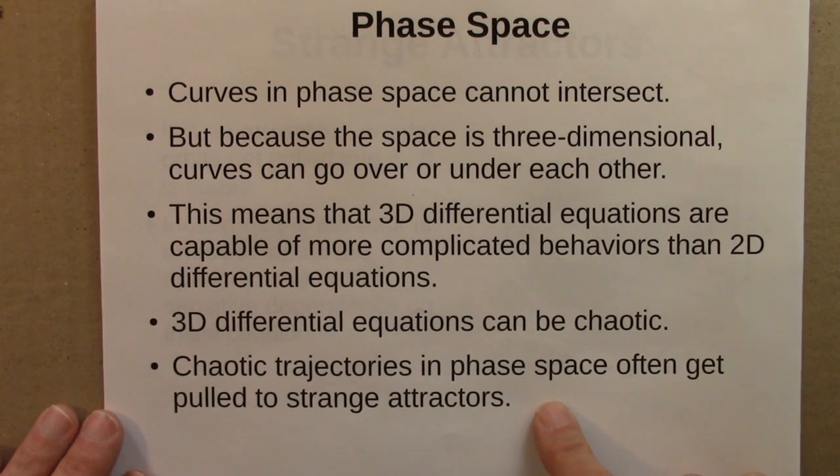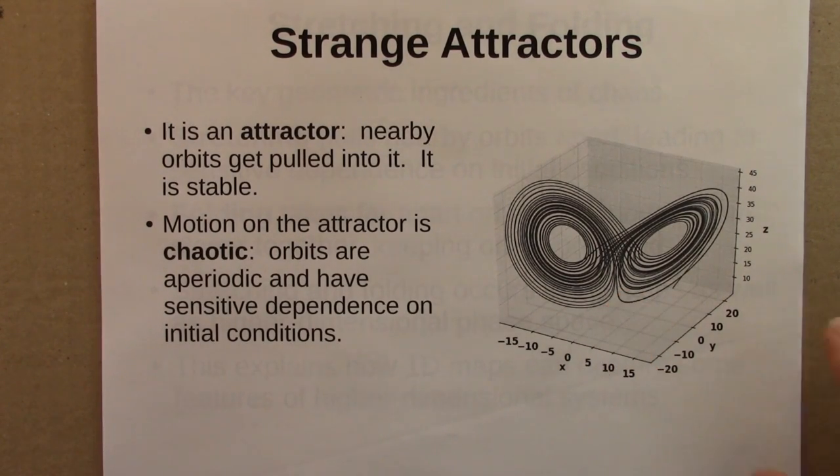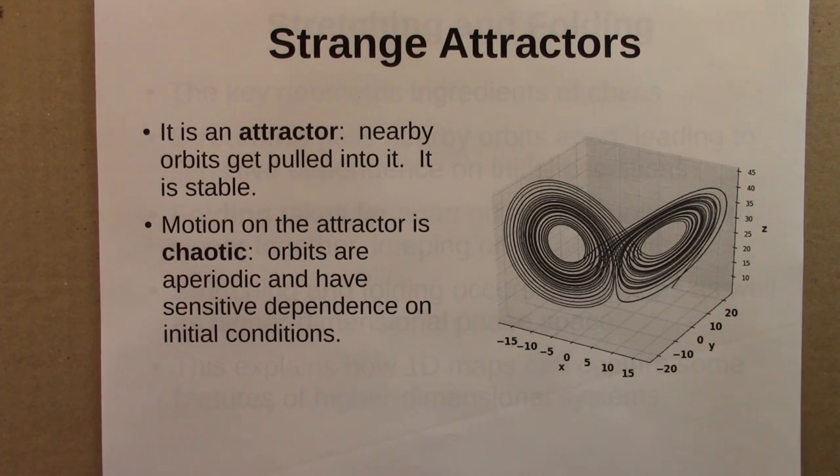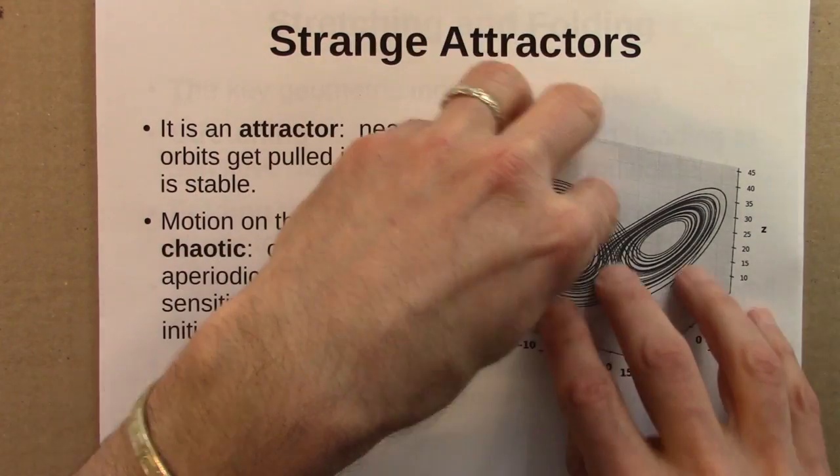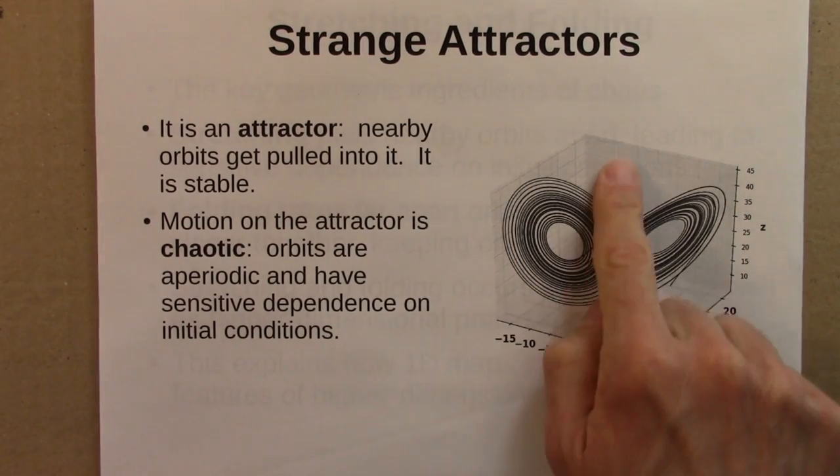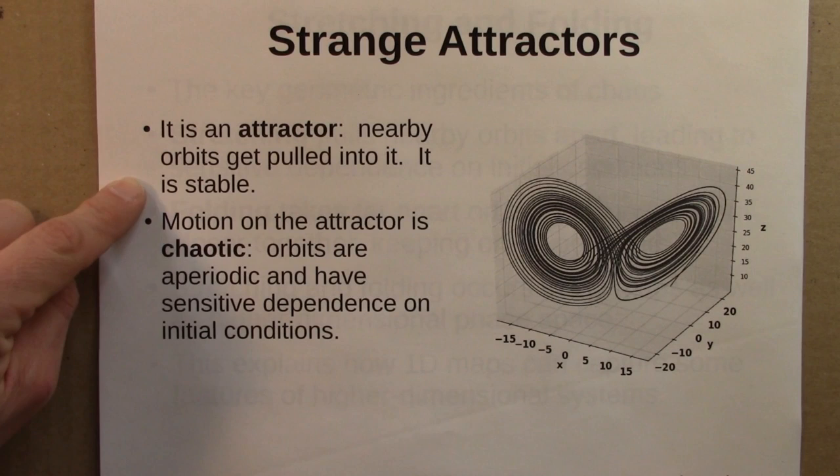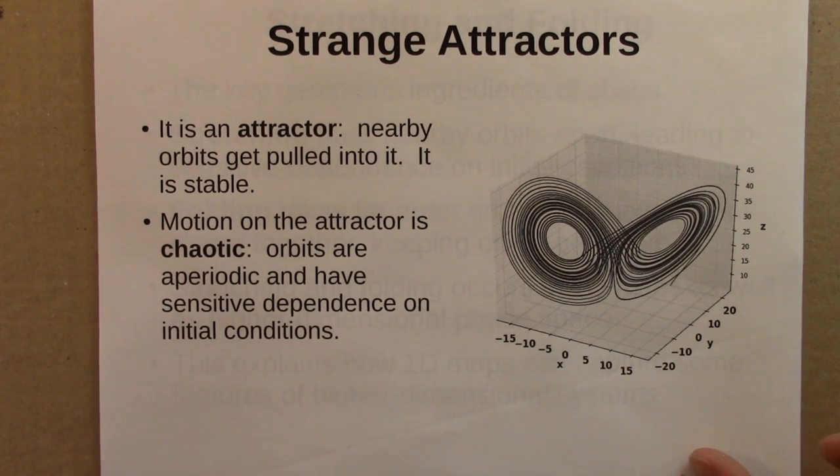And then we saw that chaotic trajectories in phase space are particularly interesting and fun. They often get pulled into these things called strange attractors. So here's the Lorenz attractor for the famous values for Lorenz equation. And strange attractors, what are strange attractors? Well, they're attractors. And what that means is that nearby orbits get pulled into it. So if we have a lot of initial conditions, they all are going to get pulled onto that attractor. And so in that sense, it's stable. If you're on the attractor and somebody bumps you off a little bit, you would get pulled right back towards it. That's what it means to be stable. So it's a stable structure in phase space. But the motion on the attractor is not periodic, the way most attractors that we've seen are, or even fixed points. But the motion on the attractor is chaotic. So once you're on the attractor, orbits are aperiodic and have sensitive dependence on initial conditions. So it's an attracting chaotic attractor.